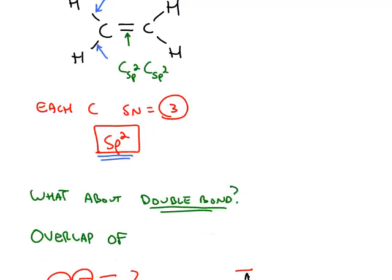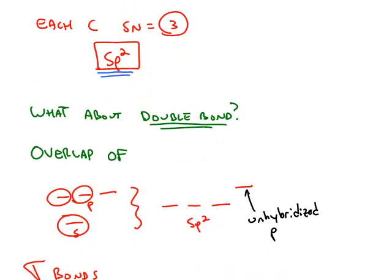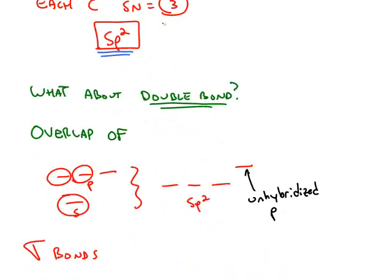The second bond is called a pi bond, and whether it's a double bond or triple bond, after the first bond, any multiple bonding is always from the overlap of unhybridized p orbitals.